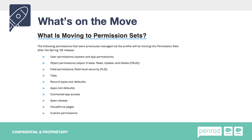Some things that are going to be moving over to permission sets are your user permissions, your system and app permissions, your object permissions — that's your basic CRUD. Field permissions, so your field level security is moving over there, your tabs, your record types — not your defaults like we just discussed, but you can add additional record types to a user based on the permission set. Connected access, Apex classes, Visualforce pages, and custom permissions also are being moved over to permission sets.